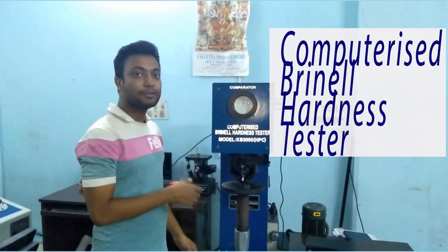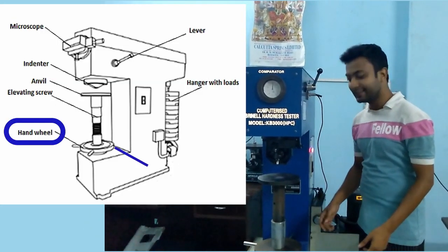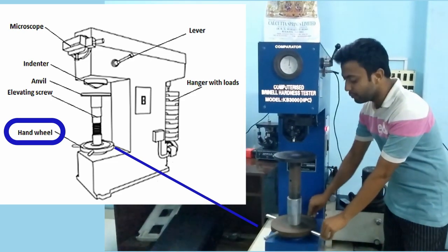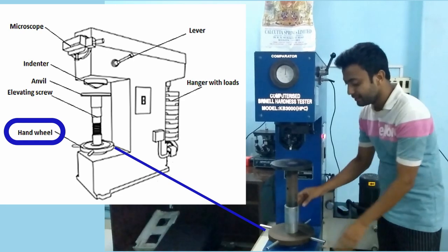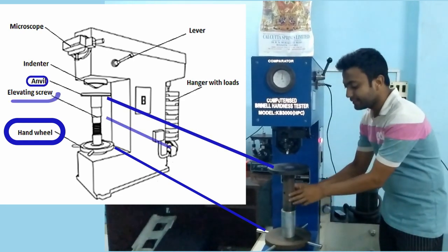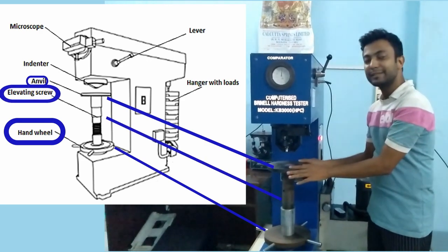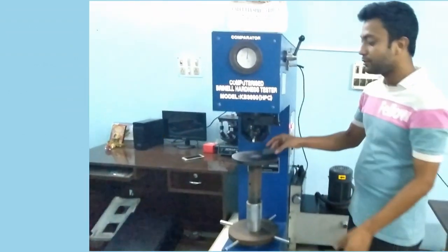Before starting the test, I will show you the components. The first component is handwheel. By moving it clockwise and anticlockwise direction, we can up and down the handwheel. And this is elevating screw. Handwheel is basically the place where you can keep the sample and do the testing.